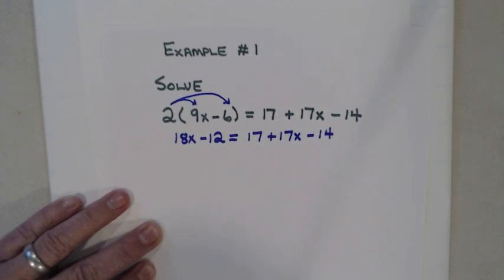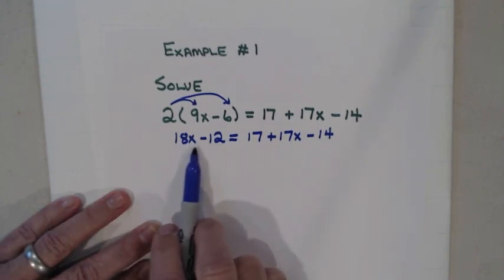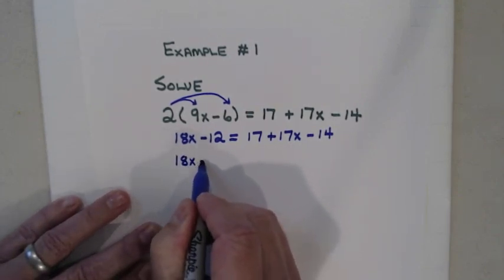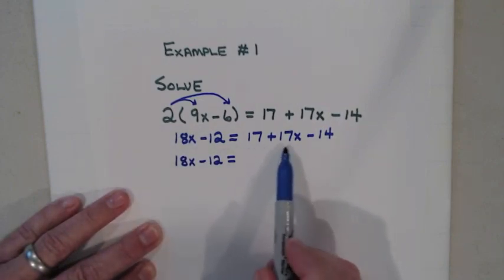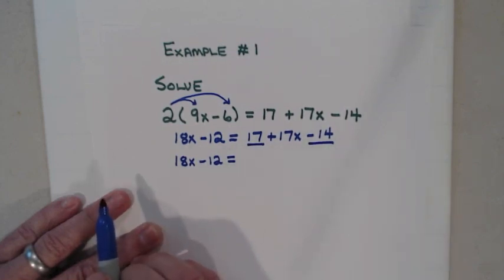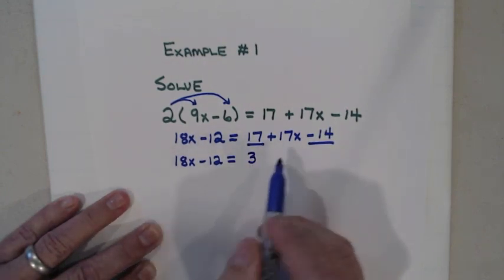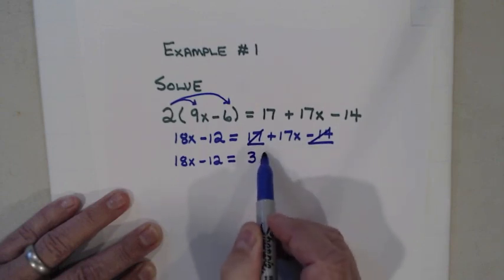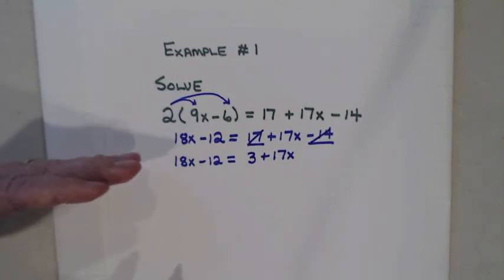According to the checklist, the next thing is combining like terms. I look at the left side of the equal sign — there's nothing to combine there, so I write down 18x minus 12 equals. On the right side, I can combine 17 and negative 14. The signs are different, so I subtract and take the sign of the larger number: 17 minus 14 is 3. I bring the positive 17x down. Like terms combined.